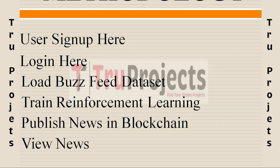In the 'Train Reinforcement Learning' module, the reinforcement learning algorithm is trained using the loaded dataset. The algorithm compares news articles to determine similarities and differences, aiding in the classification of real and fake news. Training the algorithm is essential to improve its performance and achieve accurate detection results.